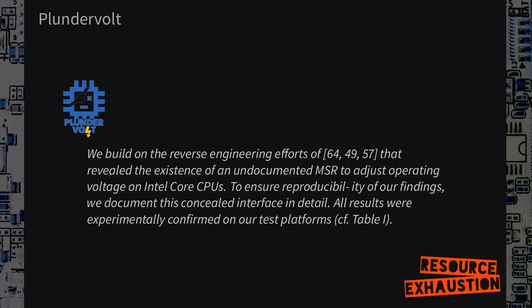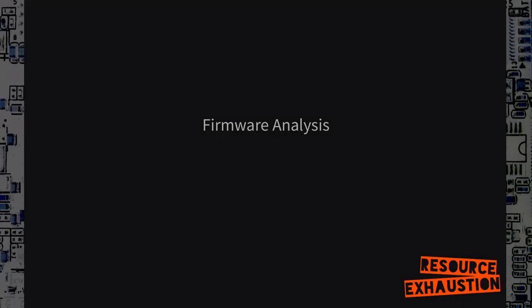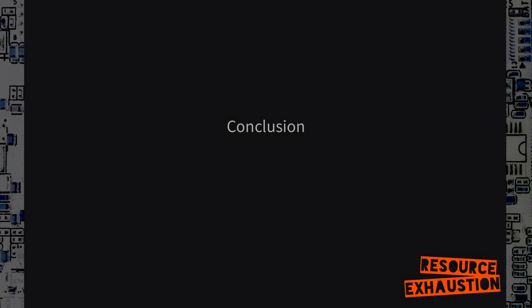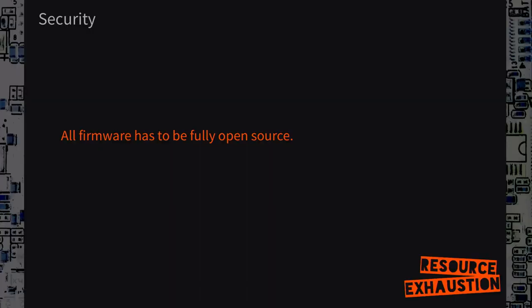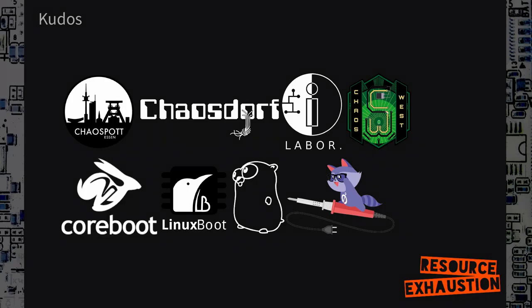We have security issues. We want to analyze firmware. I'll briefly skim through some data structures — you can approach me later for more. And I want to come to this conclusion, because this is the important part: for security, all firmware has to be open source. Here's a list of acronyms and some other talks to refer to. Thanks to everyone who helped me with this — all the hackerspaces I hang out at, the Chaos West team, this stage, and the open source firmware projects. Please come to our assembly if you want to know more.